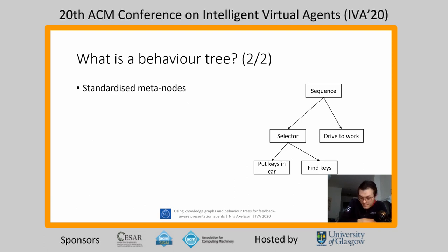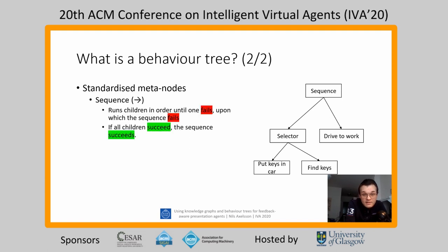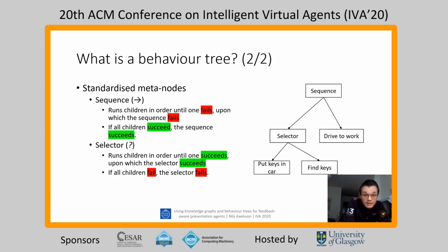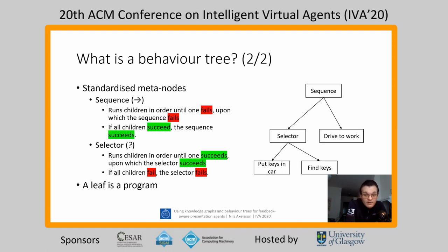There are two specific node types we use heavily: the sequence and the selector. A sequence runs its children until one fails or until all succeed, and a selector runs its children until one succeeds or until all fail. By stacking these and nesting them inside each other, we can represent any order of execution in the leaves of the tree. The leaves are arbitrary programs that can return success, failure, or running, allowing us to execute any behavior in any order.